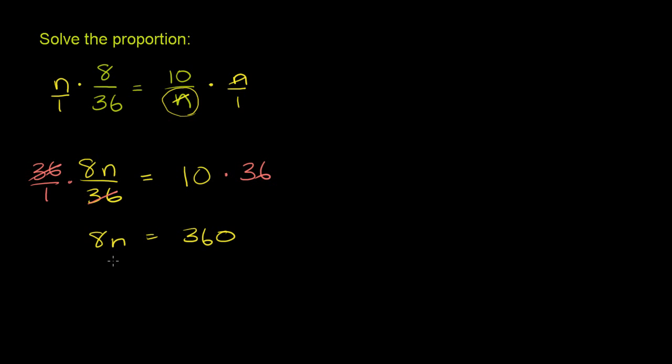Now to solve for n, we can just divide both sides of this equation by 8. So if you divide that side by 8 and that side by 8, the left-hand side, the 8's will cancel out, and you are left with n is equal to 360 divided by 8.